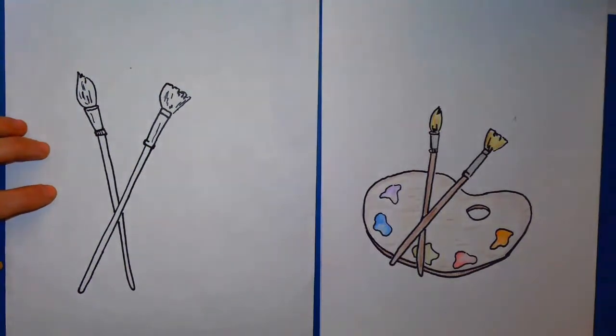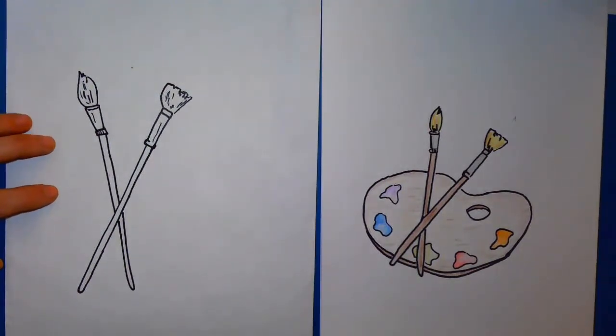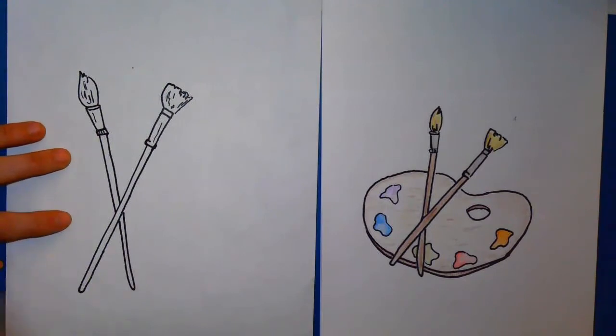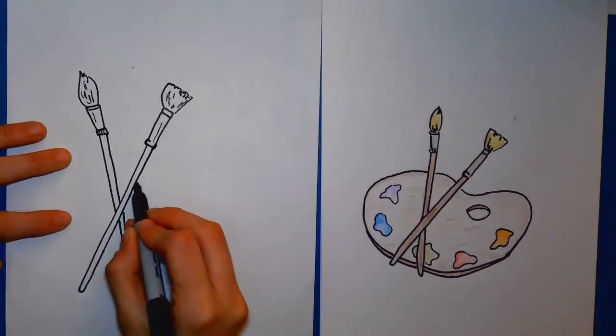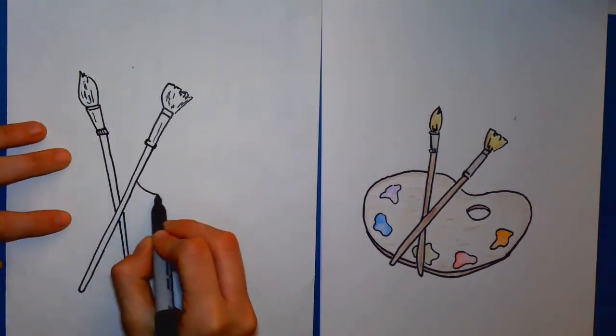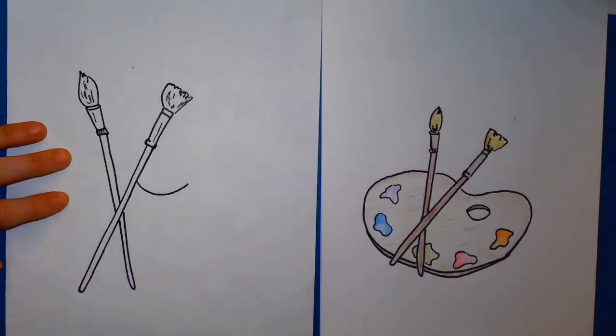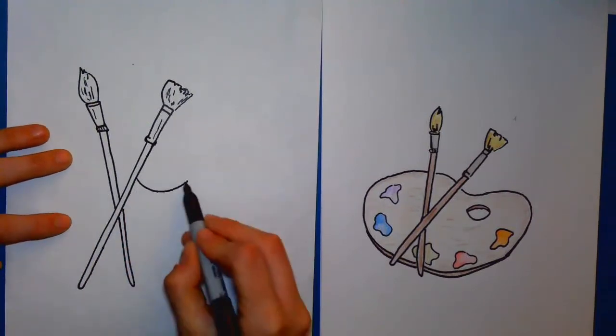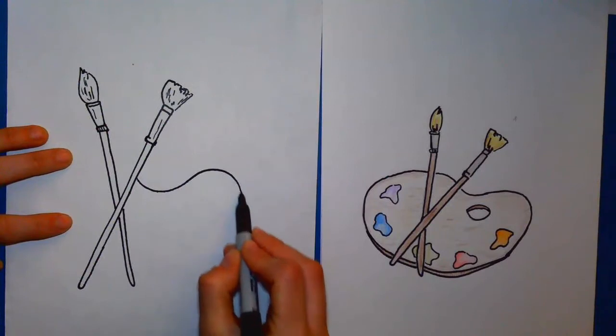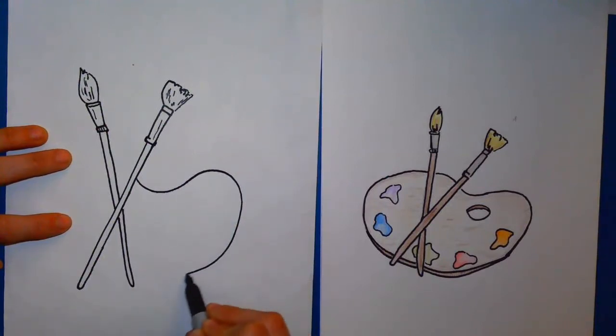Alright, so now that we have our paintbrushes, we need our paint palette. So we're going to go ahead and do our palette. We'll start with a line that curves in from the left side. And then from there, we're going to curve it up, and then around, and back down.